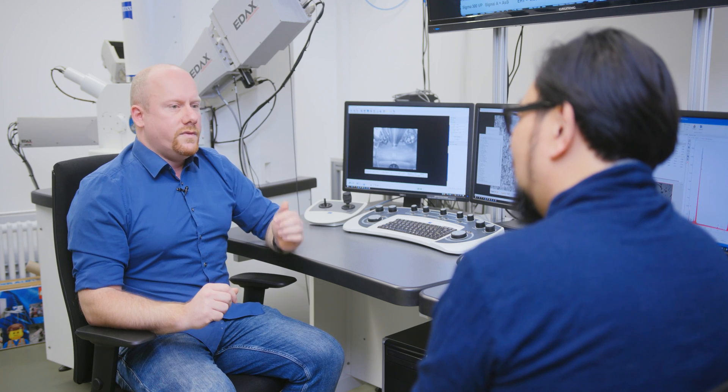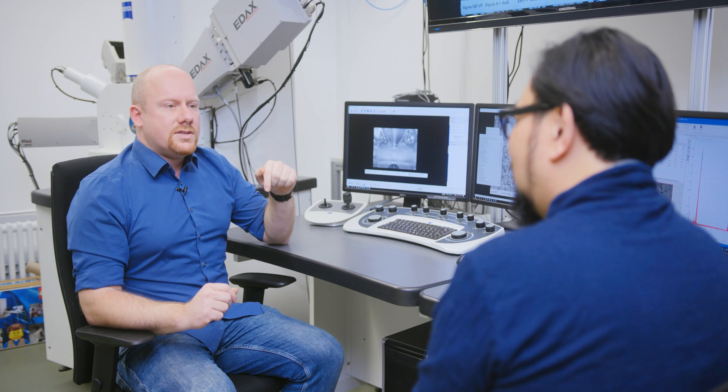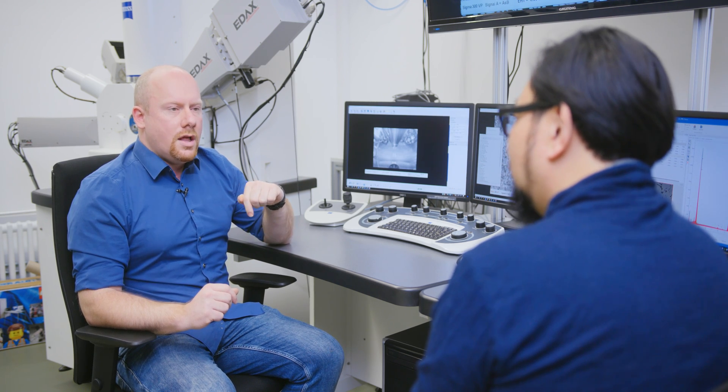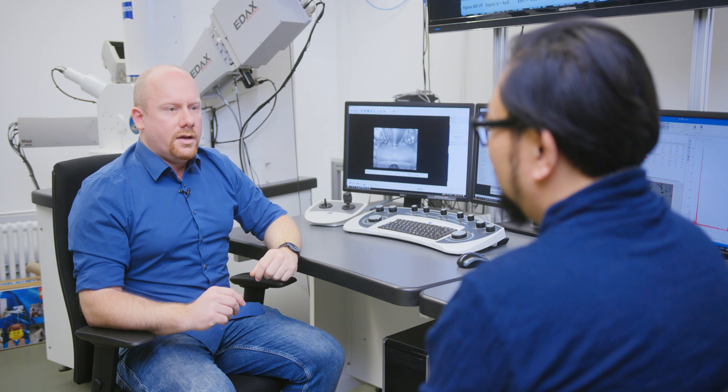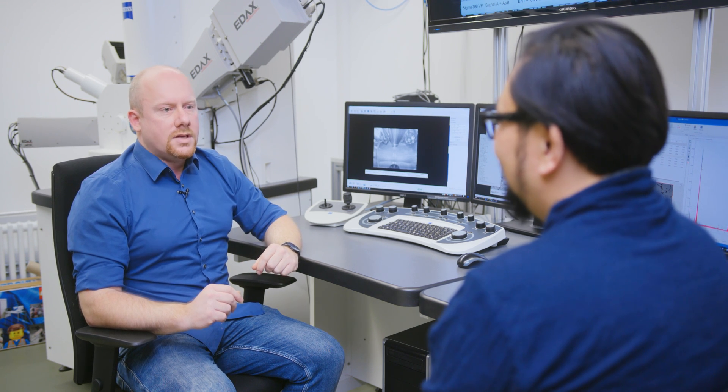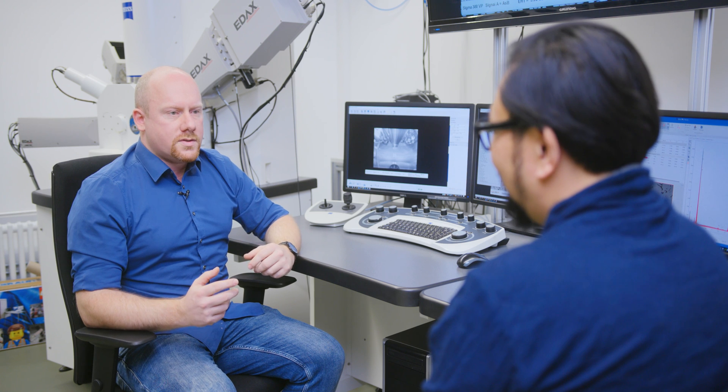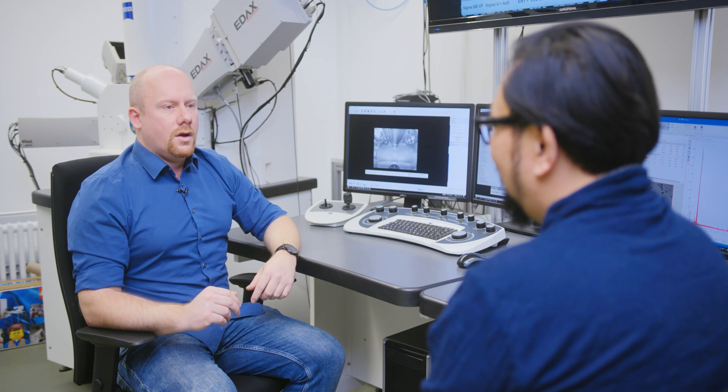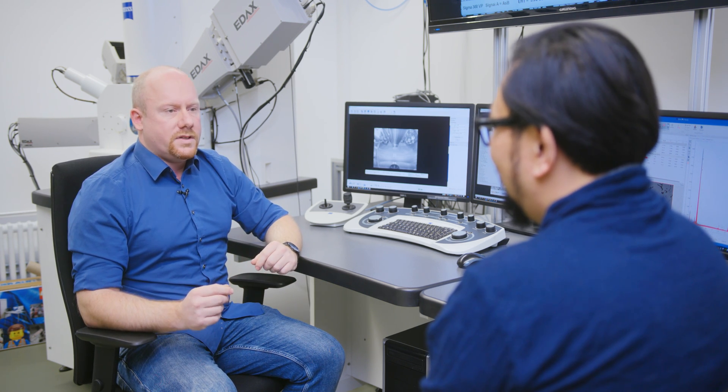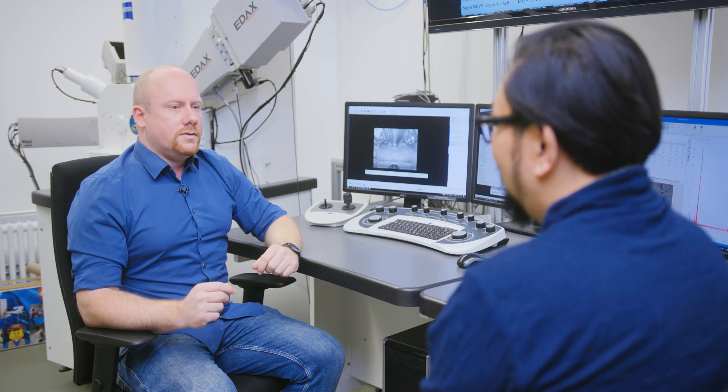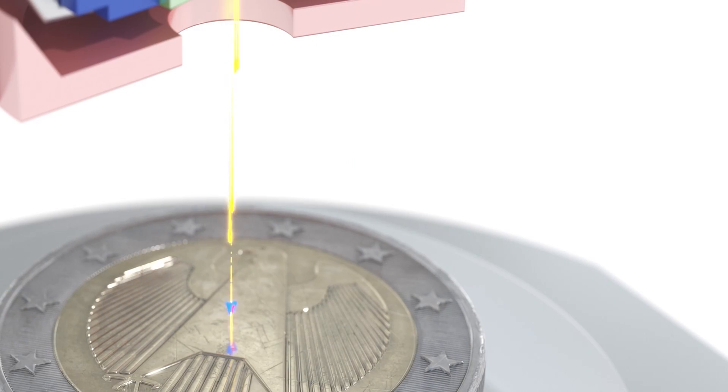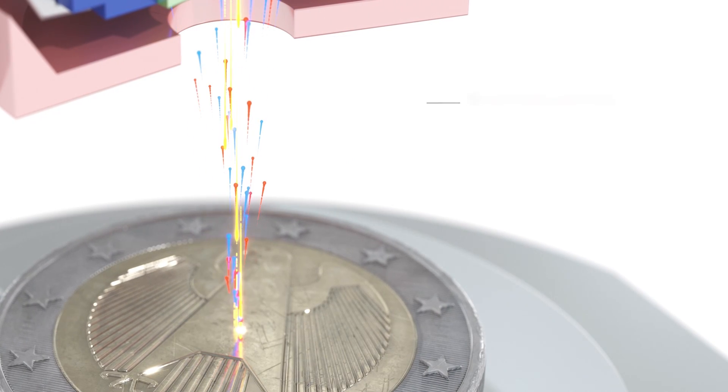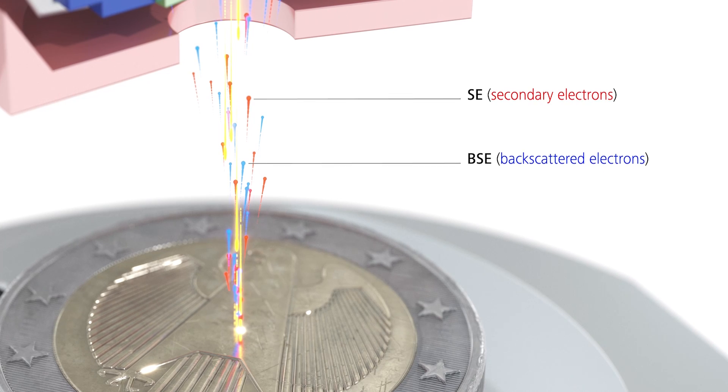The second phenomenon we use is when the primary electrons don't hit an electron of the sample material, but just fly past the atom core, they are deflected. And the heavier the atom core, so the higher the Z value or the higher the density of the material, they are more likely to be traversed around the electron core and come straight back up. This is what we call the backscattered electrons.